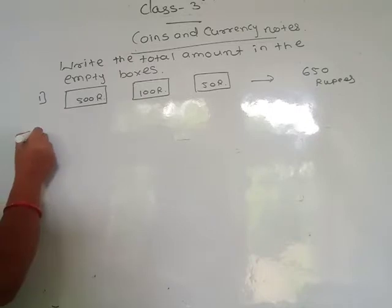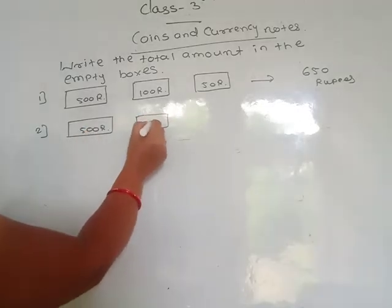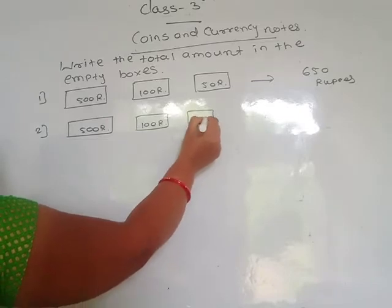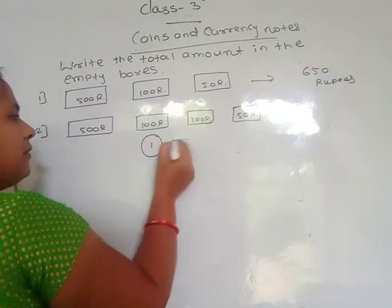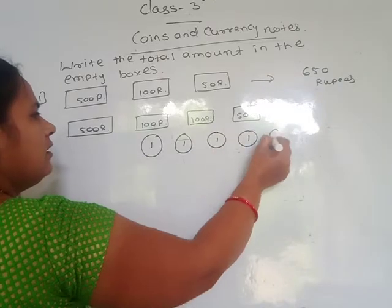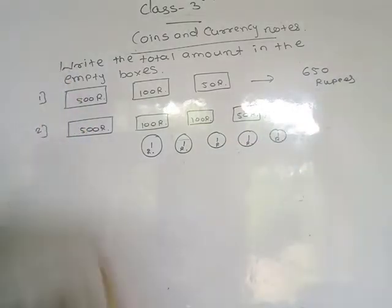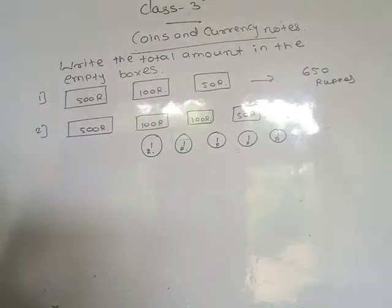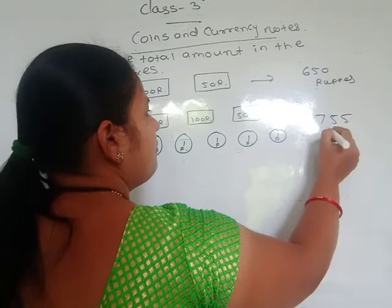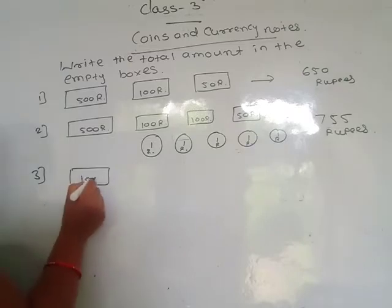Second one: here one 500 rupees note, then one 200 rupees note, then one 50 rupees note, and here 1 rupee coins — 5 coins. Count them all: 500 plus 100 is 600, plus 100 is 700, plus 50 is 750, and these 5 coins means 755 rupees.